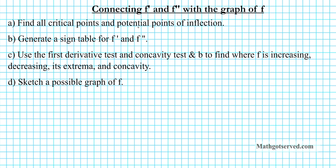For part A, we're going to find all critical points and potential points of inflection. For part B, we're going to generate the sign table for f' and f''. For part C, we're going to use the first derivative test and concavity test to find where the function is increasing, decreasing, its extrema, and concavity. For part D, we're going to sketch a possible graph of f. The function under consideration is f(x) = 3x² - 3x³ on the interval [-1, 2].